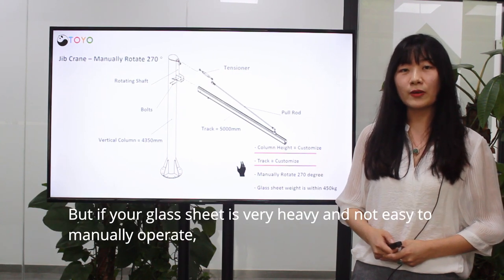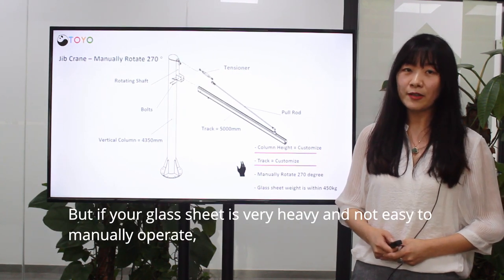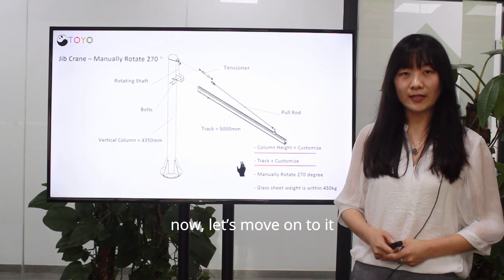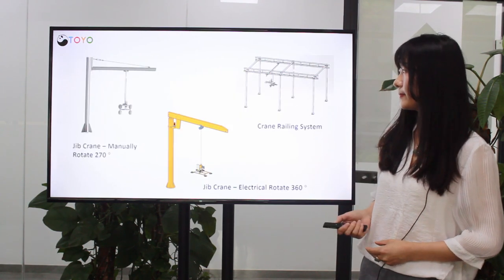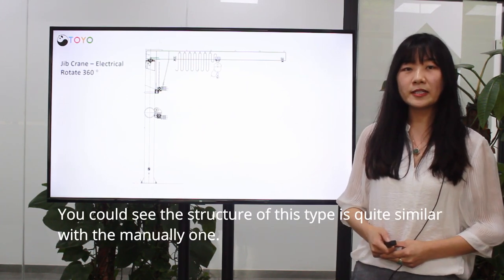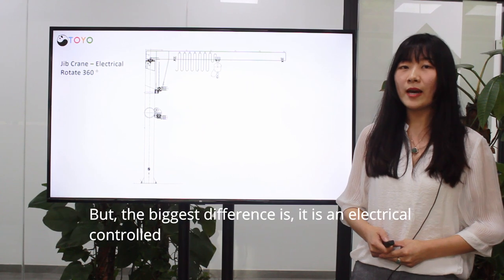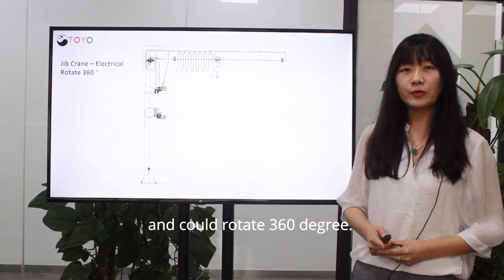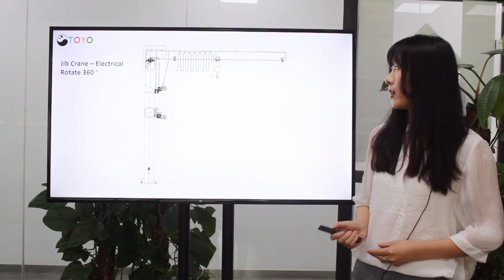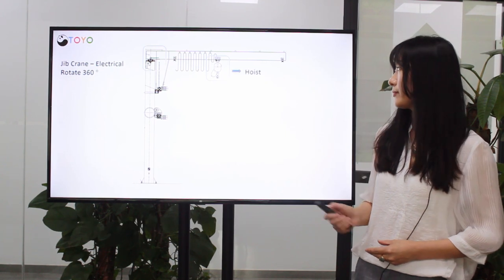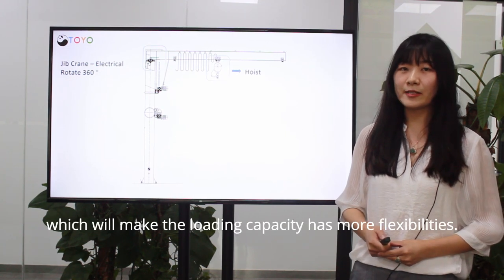But if the glass sheet is too heavy and cannot be manually operated, then we suggest you to choose the electronic one. Now let's move on to it. You could see the structure of this is quite similar with the manual ones, but the biggest difference is it's an electronic control, and it could do 316 degree rotation. For the big glass size, it could be equipped with a hoist, which will make the loading capacity has more flexibility.